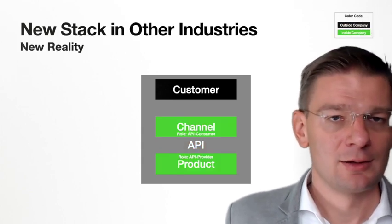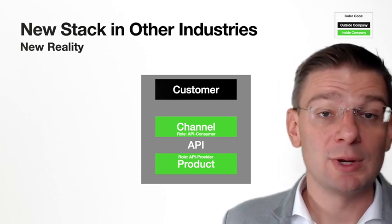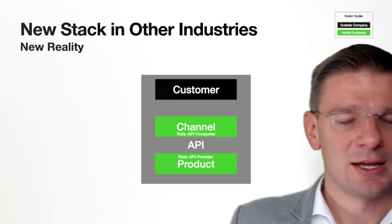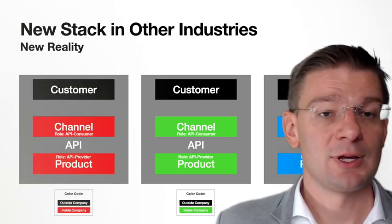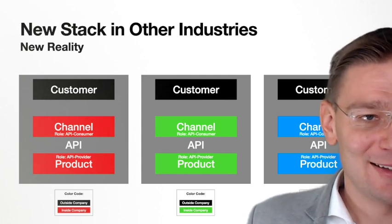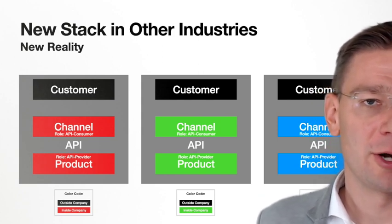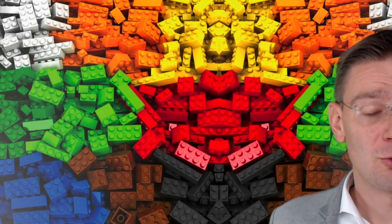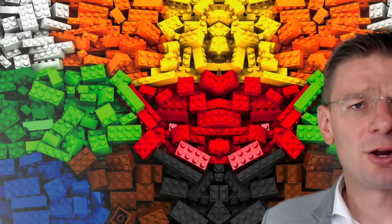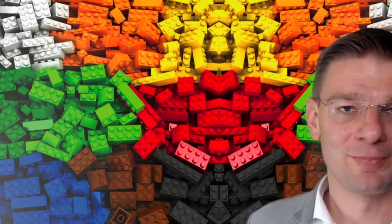What we see in banking is also, to some extent, happening in other industries as well, where they also have this separation between the channel and the underlying product. So you have this pattern in the red industry, the green industry, the blue industry, and of course in our orange banking industry. The result of this opening up between channel and product — the appification of all these underlying products — is a set of building blocks representing those underlying business products, like Lego building blocks, all over the industries, which you can now reassemble and recompose.